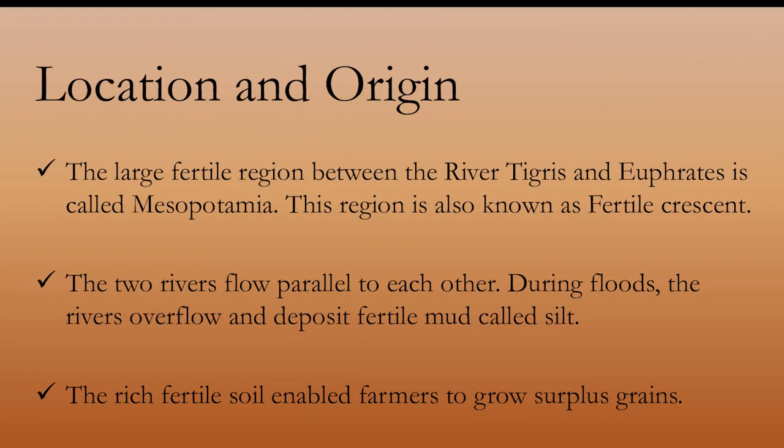Where is Mesopotamia? The large fertile region between the rivers Tigris and Euphrates is called Mesopotamia. Mesopotamia means 'the land between rivers.' The region is also known as the Fertile Crescent. Why is it called Fertile Crescent? Tigris and Euphrates flow parallel to each other. During floods, rivers overflow and deposit fertile mud on the banks — this fertile mud is called silt. This fertile area between the two rivers forms a crescent shape, so it is referred to as the Fertile Crescent region. Fertile soil enabled farmers to grow surplus grain.